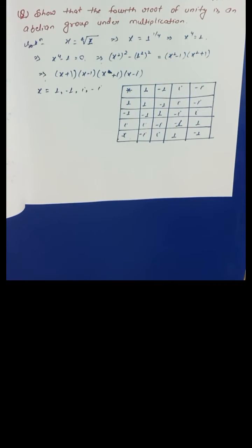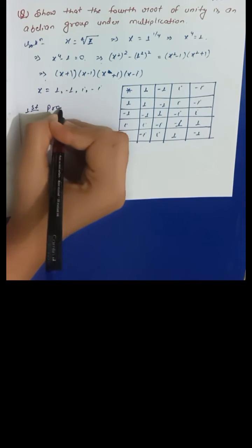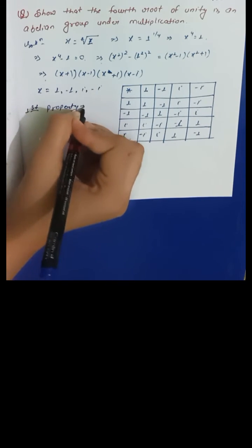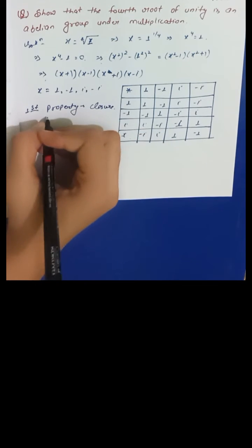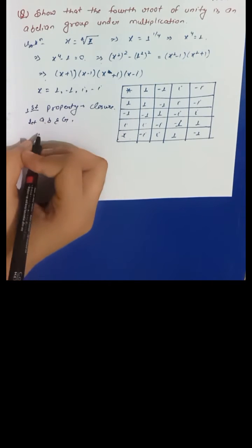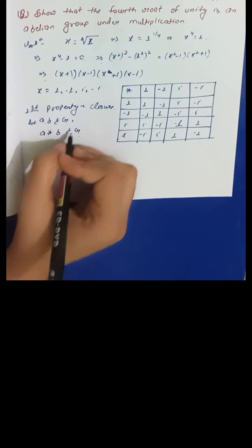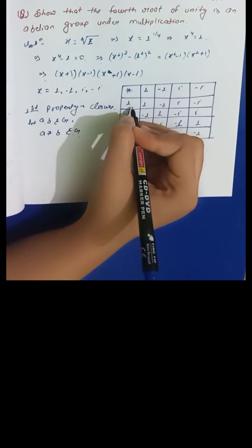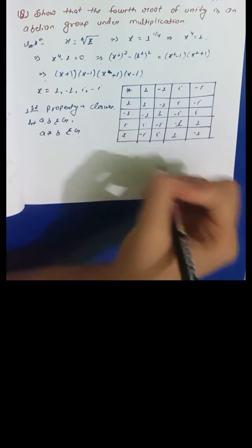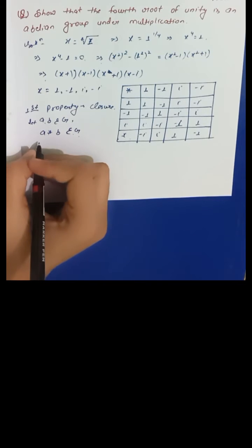For an abelian group we have to satisfy five properties. The first property is closure: for a, b belonging to G, a★b must belong to G. As we can see from the table, 1★1, 1★(-1), and all products belong to G, so closure is satisfied.